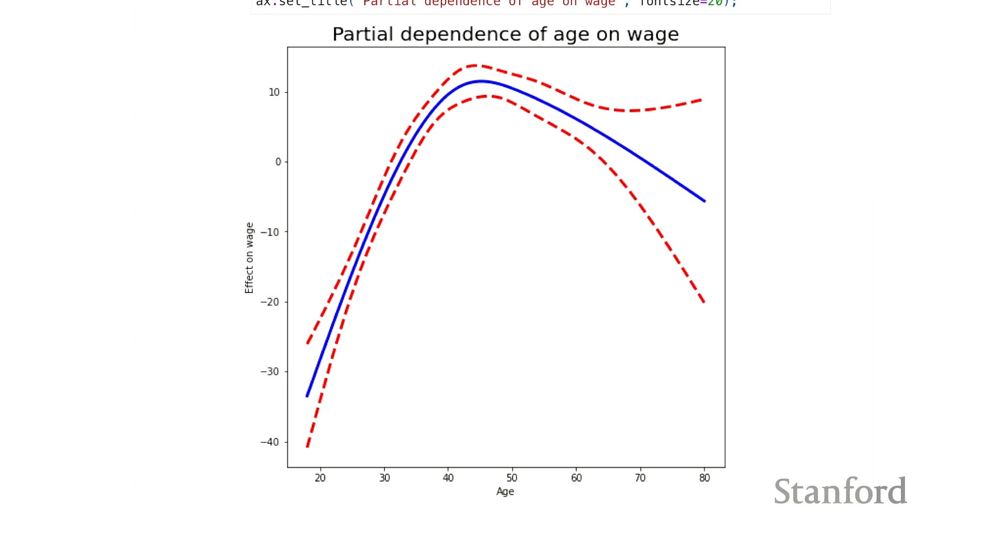So here is an estimated effect of the non-linear effect of age on wage. And the y-axis here is kind of arbitrary because there are other features in the model, unlike when we just had age. We could see that the form is actually relatively similar to what we saw before, though it's not quite as flat up here. But it has the same sort of inverted quadratic type of fit.